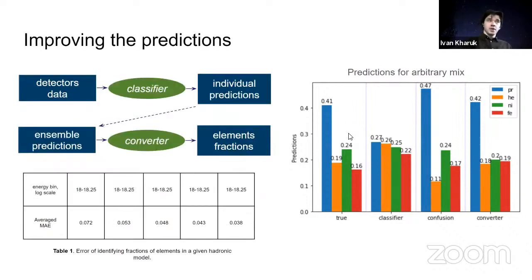In the third column, you can see if one applies the confusion matrix to the classifier predictions what will be the predictions of such scheme. As you can see, the predictions become much better, yet they're not in very good agreement with this first column. So how we can improve it further? The idea is to make use of statistics and avoid limitation of the confusion matrix, namely confusion matrix provides a linear operation on the predictions which works best for ensembles consisting only of one primary particle. We want to avoid this limitation by introducing another neural network which we call the converter, which takes as input the average predictions of the classifier and yields the true fractions of elements.